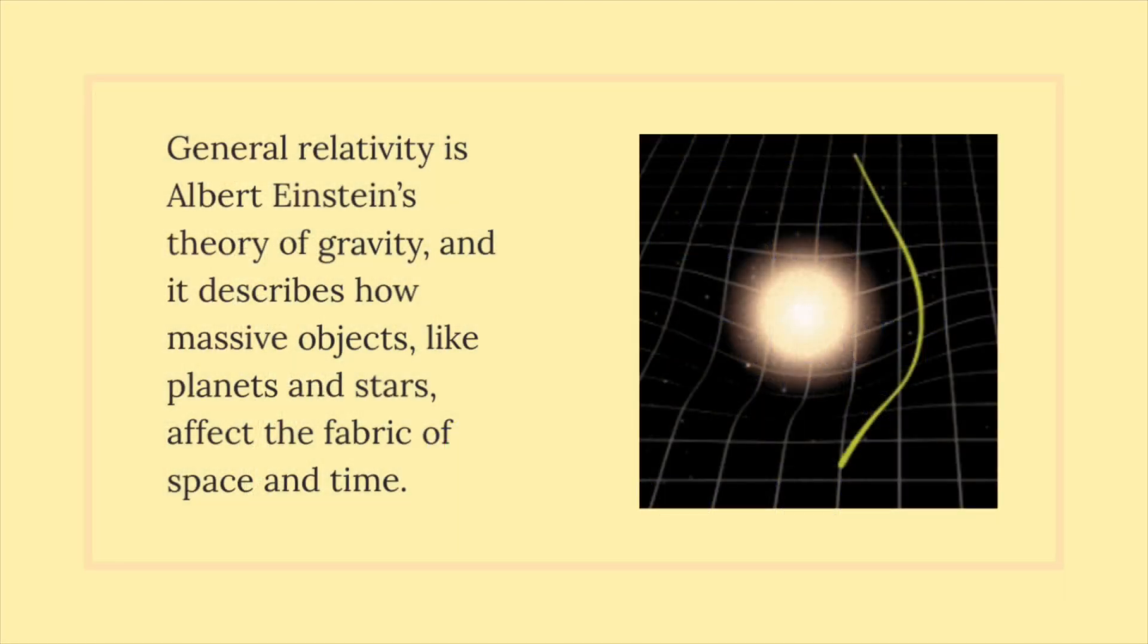General Relativity is Albert Einstein's theory of gravity, and it describes how massive objects, like planets and stars, affect the fabric of space and time.